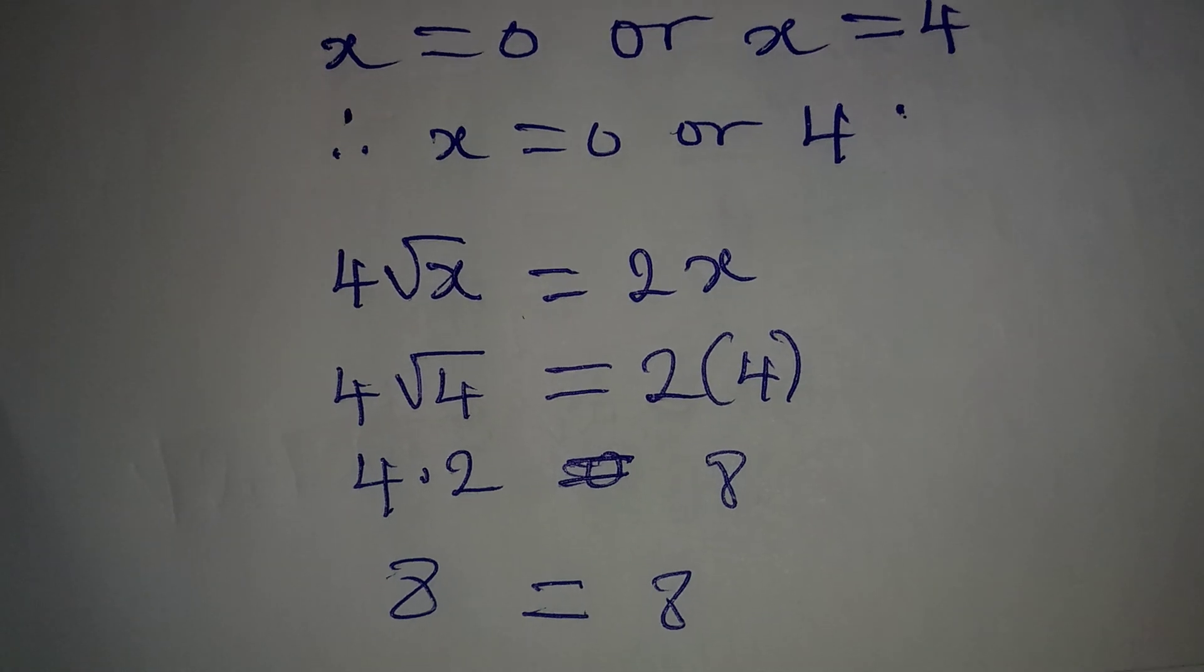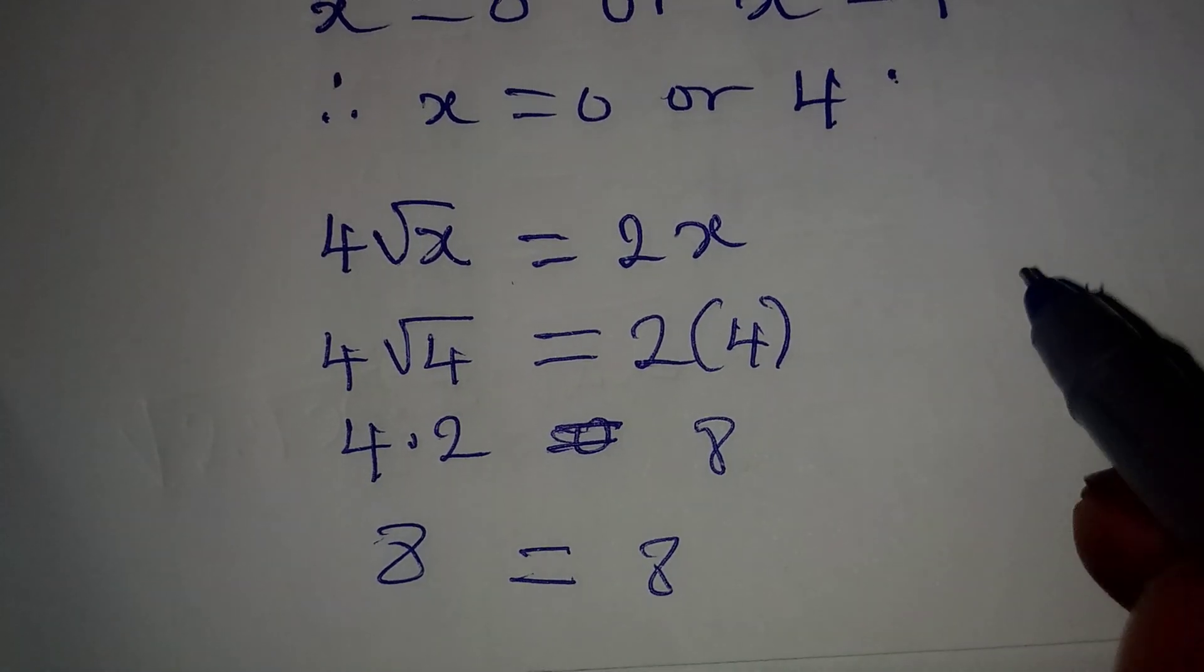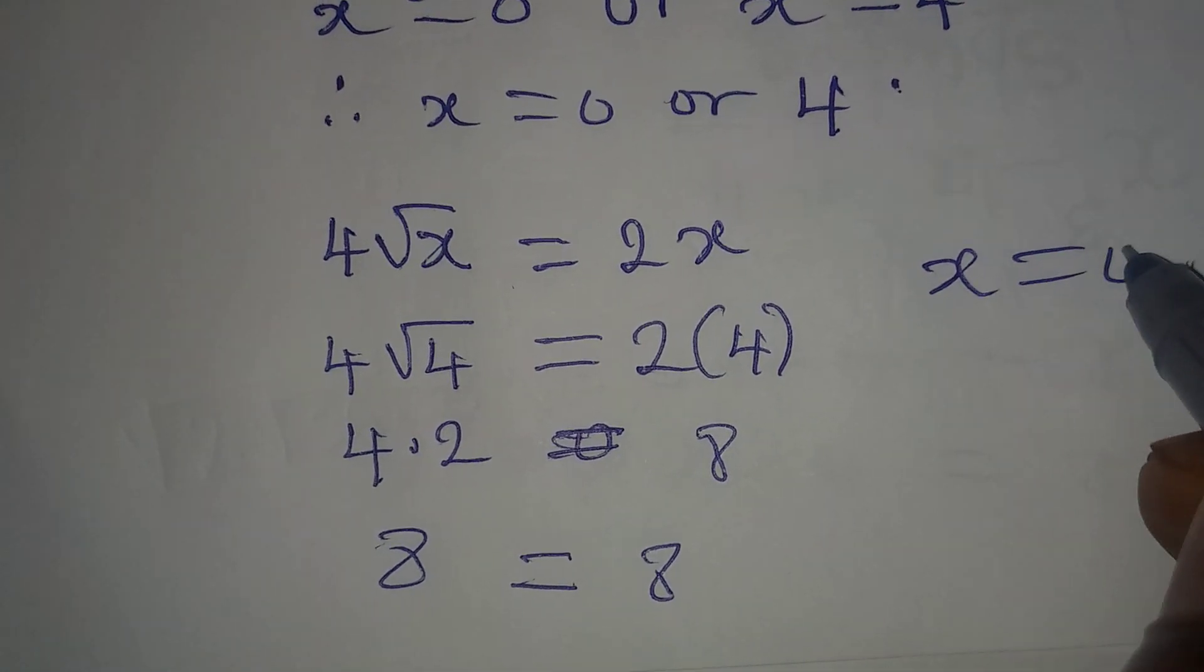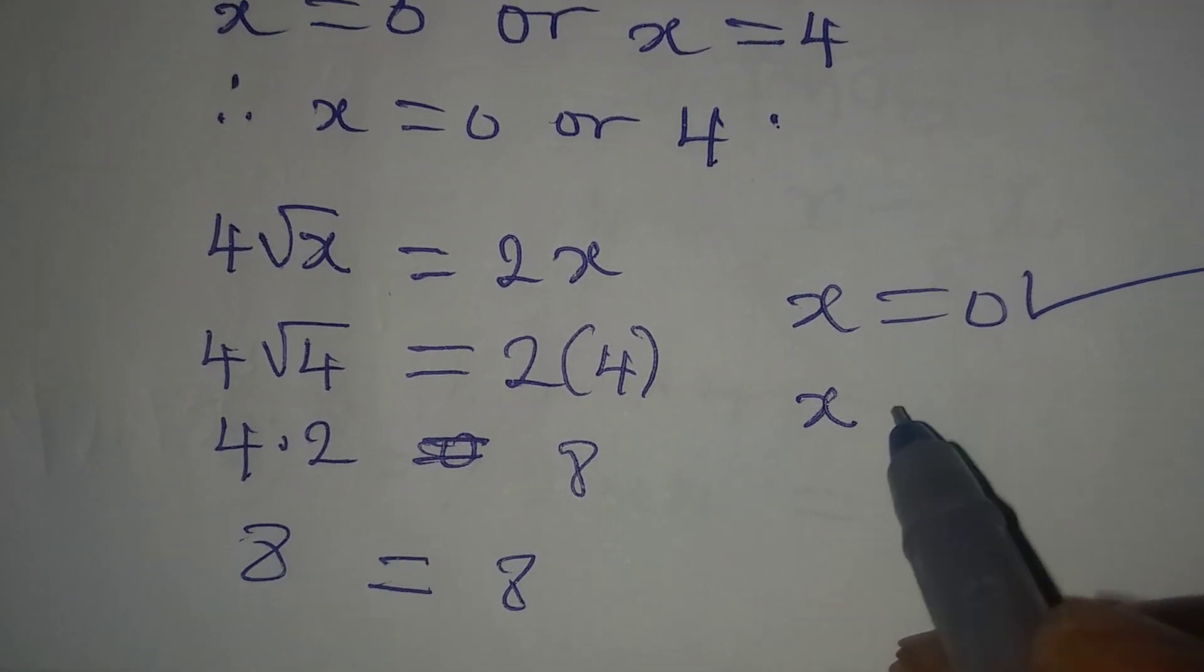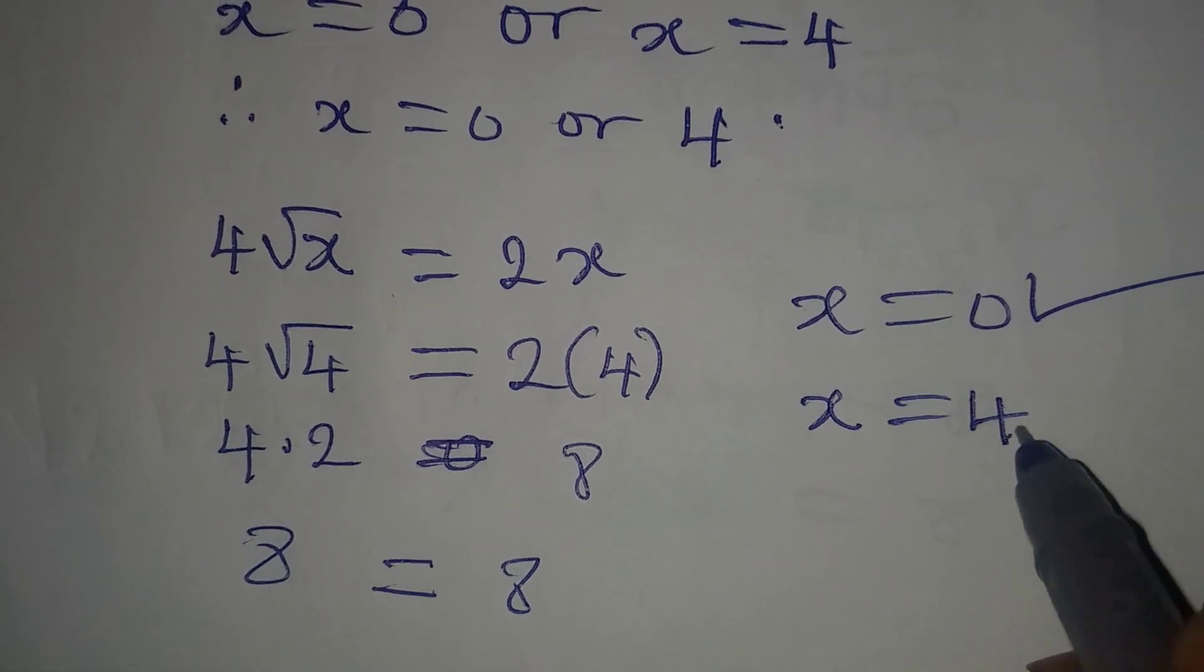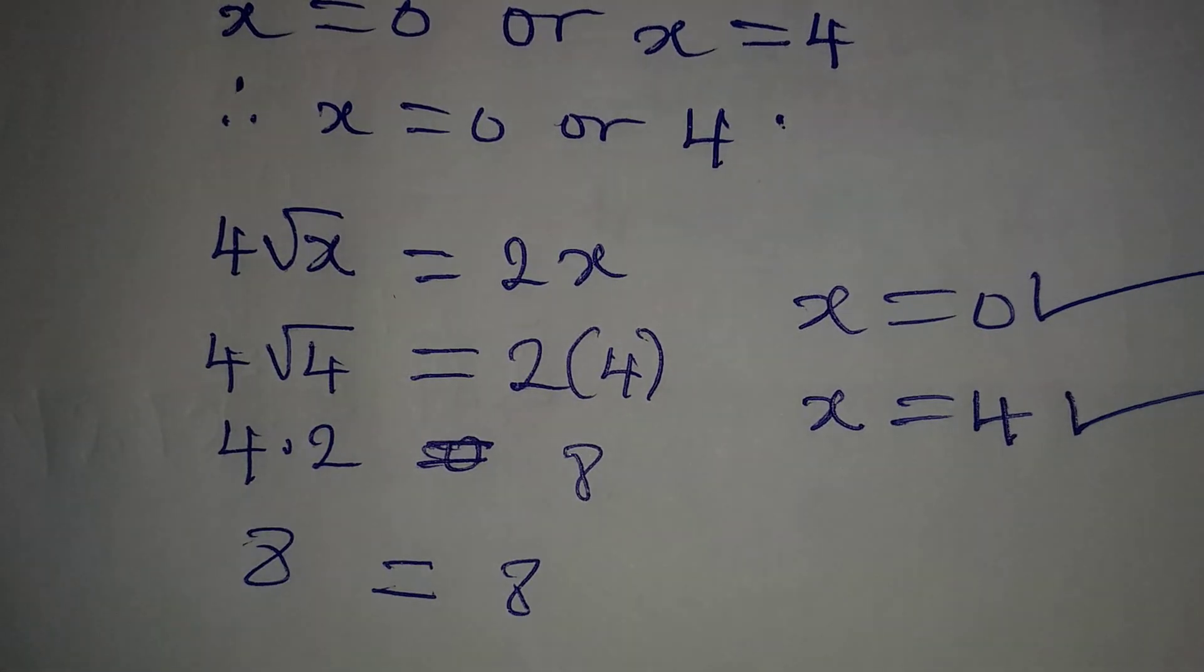This is to confirm that x = 0 is satisfying the equation and then x = 4 also satisfies the equation.